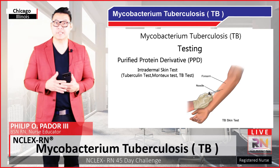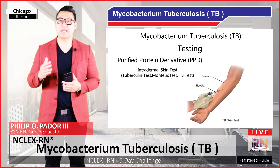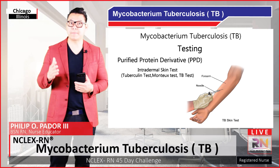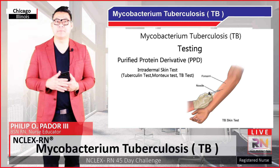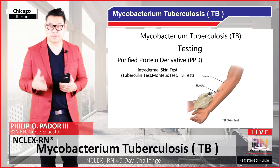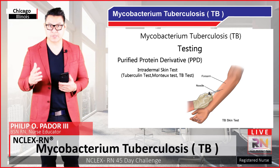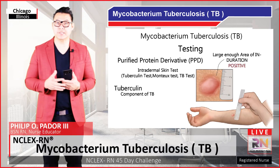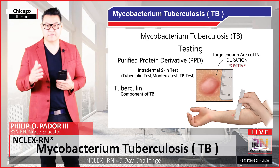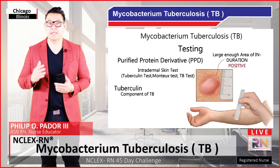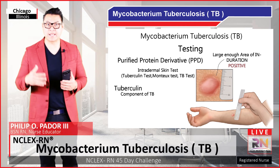Testing for TB often starts with the purified protein derivative, or PPD, intradermal skin test, sometimes known as the tuberculin skin test, the Mantoux test, or simply the TB test. With this test, tuberculin is injected between the layers of the dermis. Tuberculin is a component of the bacteria, and if a person has previously been exposed to TB, the immune system reacts to the tuberculin and produces a small, localized reaction within 48 to 72 hours. If the reaction creates a large enough area of induration — rather than just redness — it's considered to be a positive test. A positive tuberculin test simply means the patient has been exposed to TB at some point; it doesn't differentiate between active and latent disease.